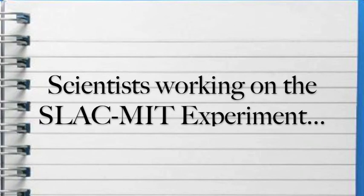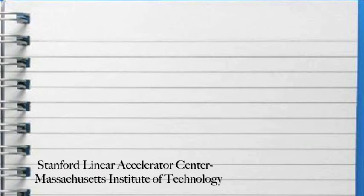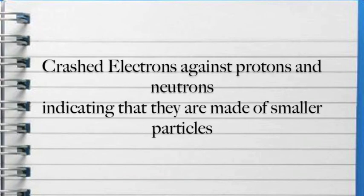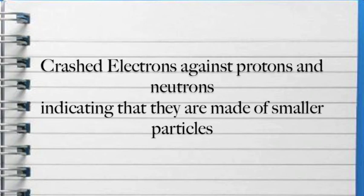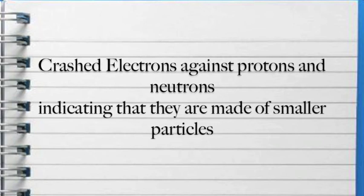Scientists working on the SLAC-MIT experiment, or the Stanford Linear Accelerator Center, Massachusetts Institute of Technology, crashed electrons against protons and neutrons. The electrons bounced off the protons and neutrons, indicating that protons and neutrons are made out of even smaller particles.